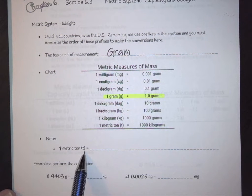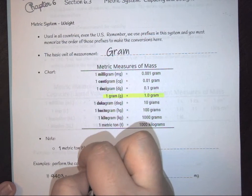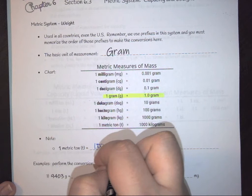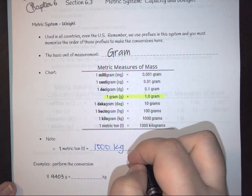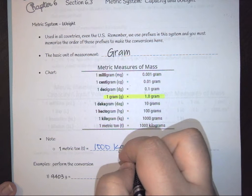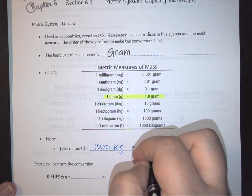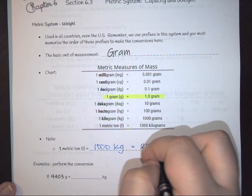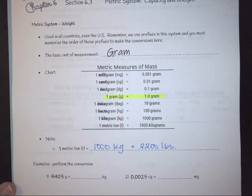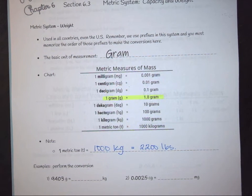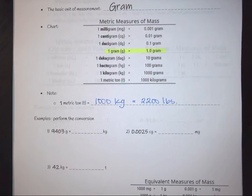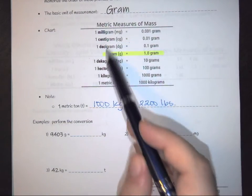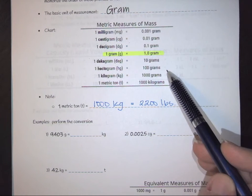The new unit we have here is the metric ton. When we talk about a metric ton, we are talking about 1,000 kilograms, which is also equal to 2,200 pounds.